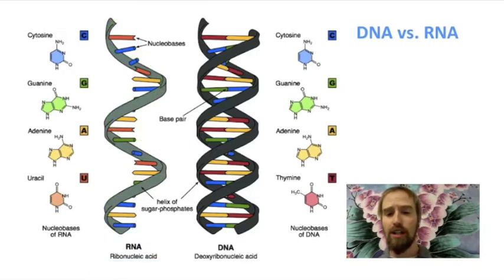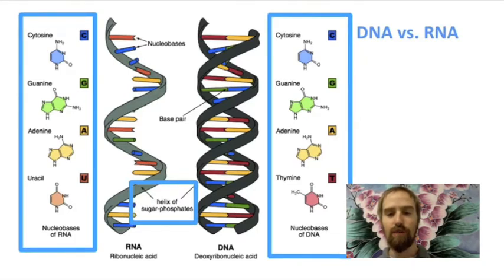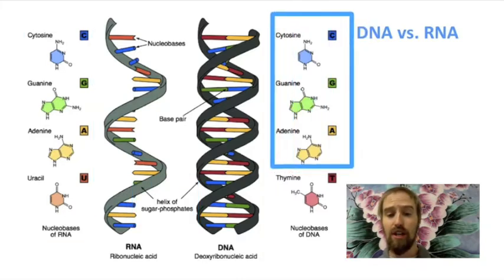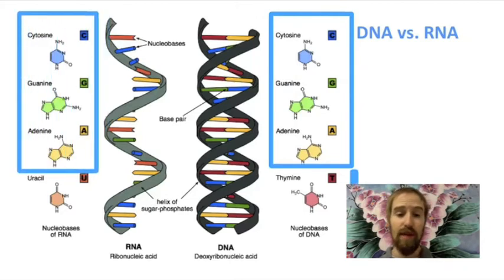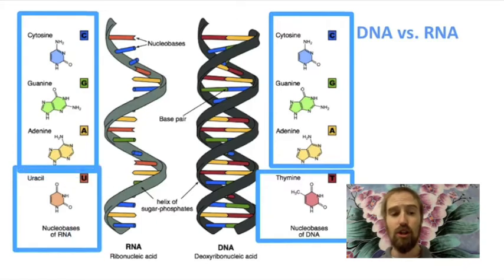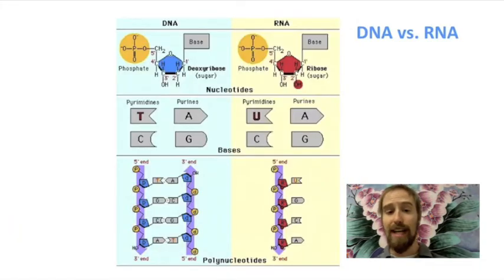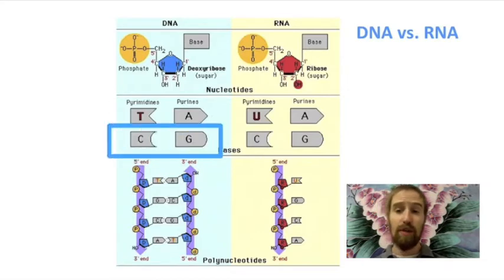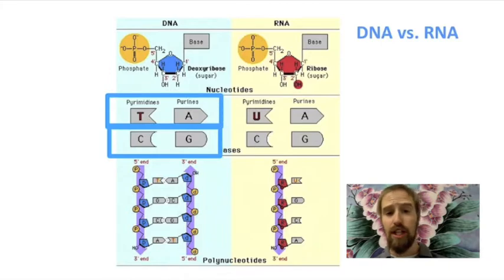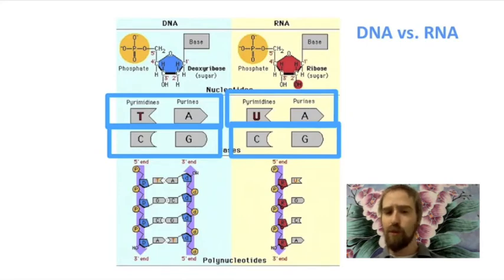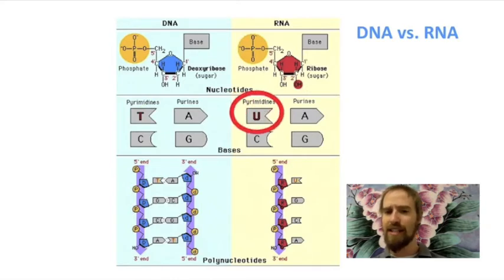Also just like DNA, RNA is comprised of an alternating sugar-phosphate backbone, with one of four nitrogenous bases attached to each sugar molecule and pointing into the middle of the helix. Both DNA and RNA contain the bases cytosine, guanine, and adenine, but whereas DNA contains the base thymine, RNA contains the base uracil. U simply replaces T as the nitrogenous base in RNA and functions pretty much just as T would. You only find U in RNA, and you'll only find T in DNA.